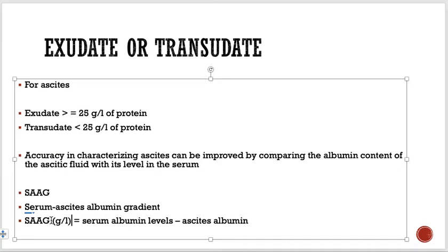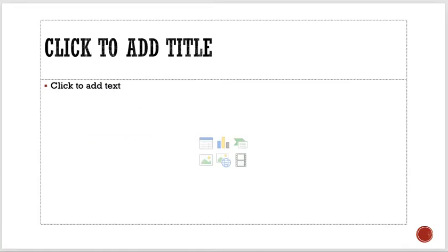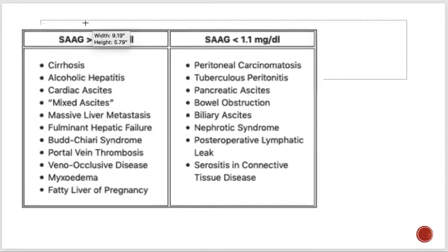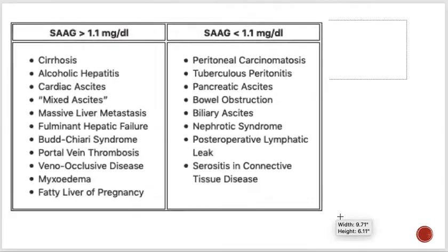We measure albumin levels in the serum and in the ascitic fluid via paracentesis, subtract them, and obtain the Serum Ascites Albumin Gradient. This is a very helpful and straightforward concept.